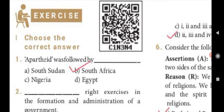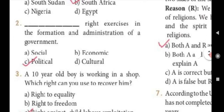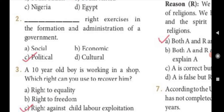Choose the correct answer. First question: Apartheid was followed by — Answer B, South Africa. Second question: Dash rights exist in the formation and administration of a government — Answer C, Political Rights.